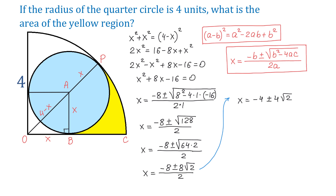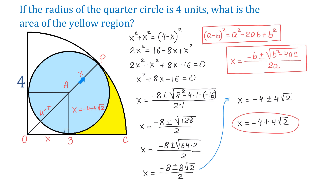Because x represents the radius, it must be positive. Therefore x equals negative 4 plus 4 square root of 2. This is the radius of the blue circle. From here the plan is to find the area of sector POC, then the area of triangle AOB and sector PAB. We will then subtract these two areas from the area of sector POC to find the area of the yellow region.